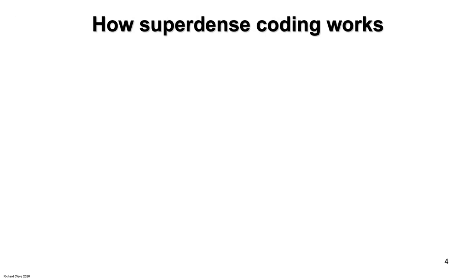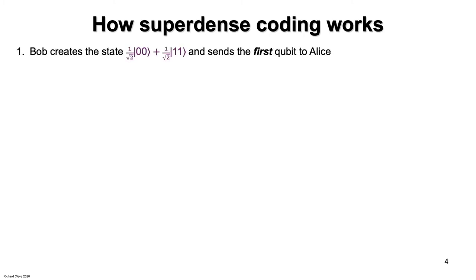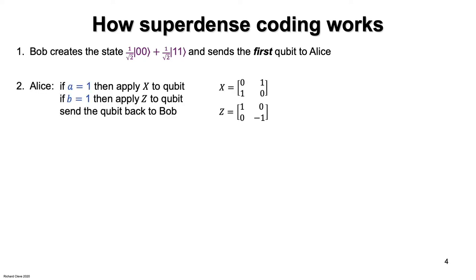How does superdense coding work? Let me show you the protocol. First, Bob creates this entangled two-qubit state — an equally weighted superposition of ket00 and ket11 — and then he sends the first qubit to Alice, and he keeps the second qubit. So Alice and Bob each possess one qubit of this two-qubit state. Next, Alice does the following. She has her two input bits, A and B. First, if A equals one, she applies the Pauli X gate to her qubit; otherwise she does nothing. Next, if B equals one, she applies the Pauli Z gate to her qubit; otherwise she does nothing. Then Alice sends her qubit back to Bob.